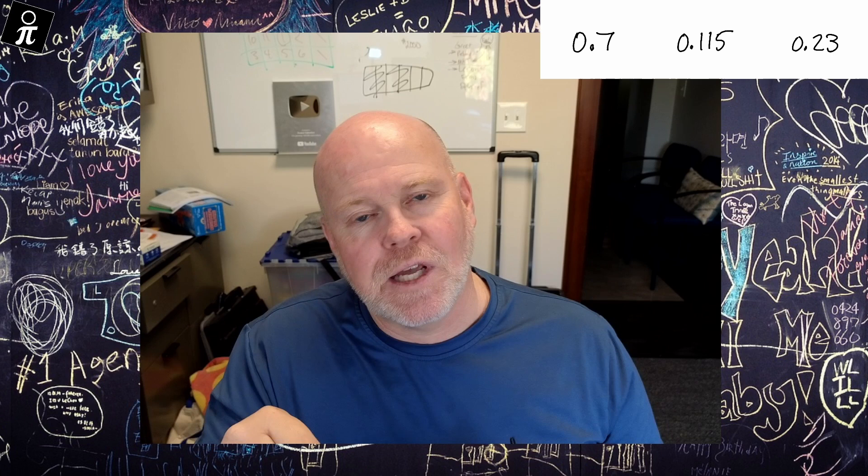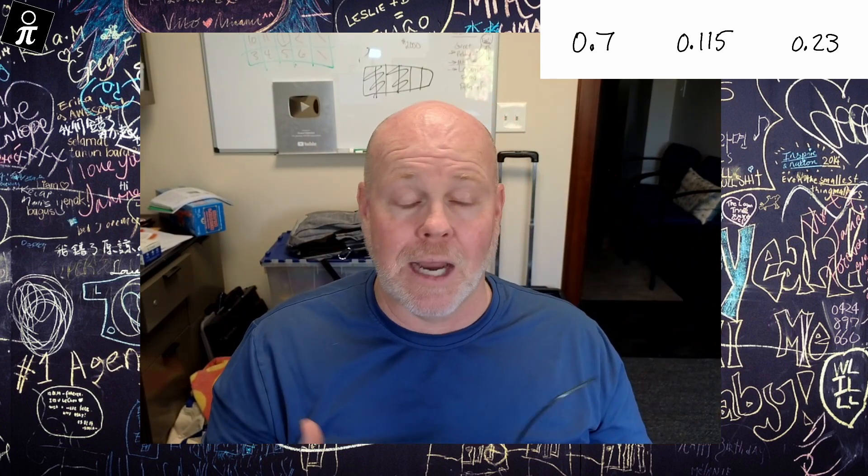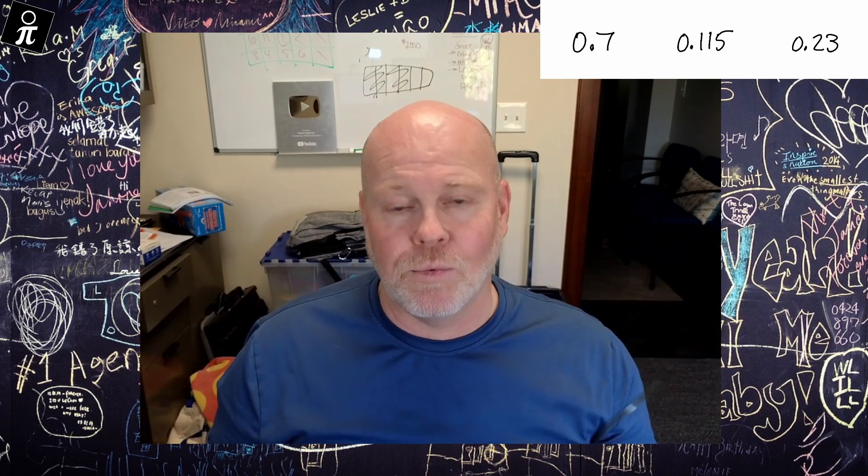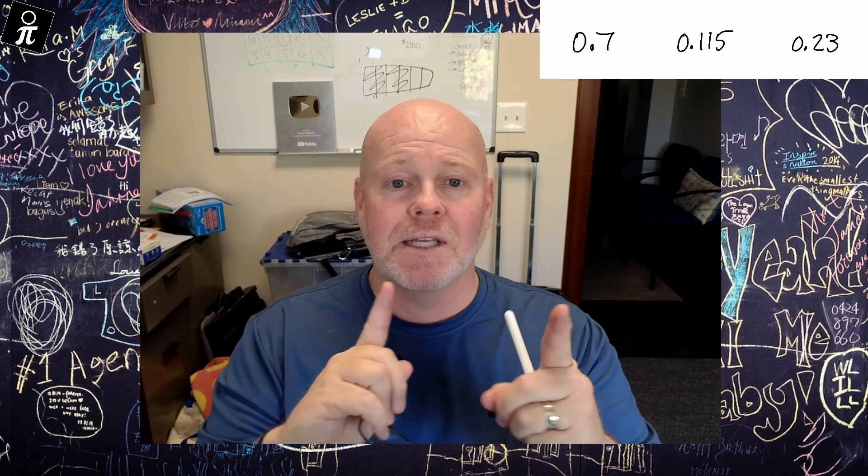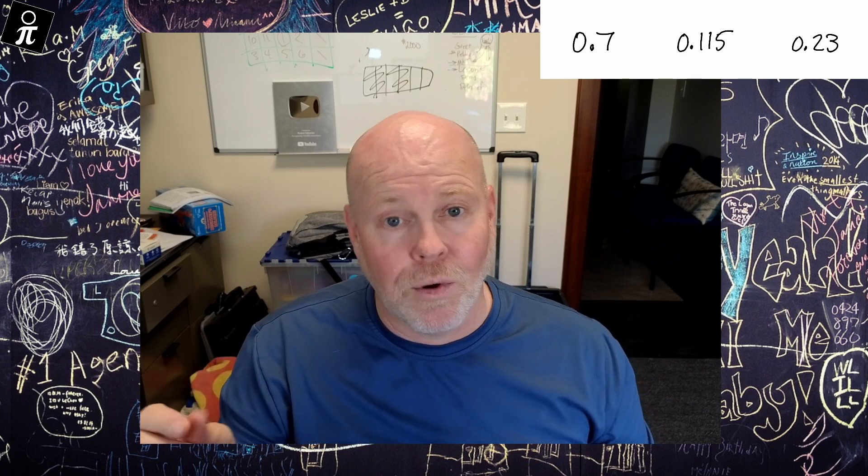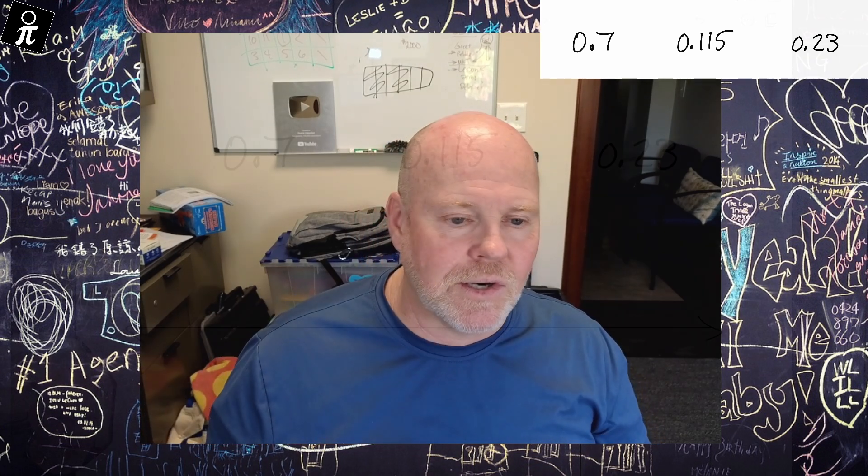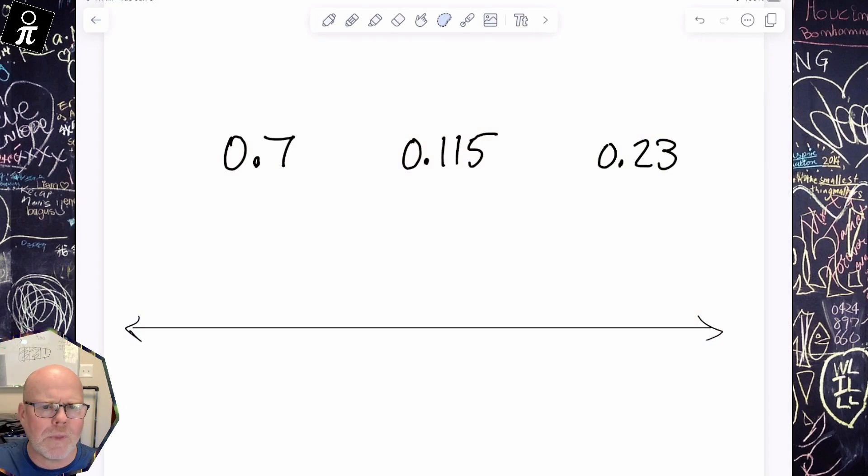So this video, we're going to show students how to place these decimals on a number line, which will then allow students to compare two decimals or sort them in order from least to greatest or greatest to least. So let's get started. We've got these three decimals: 0.7, 0.115, and 0.23.